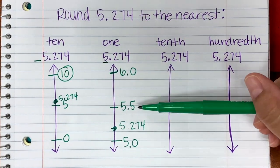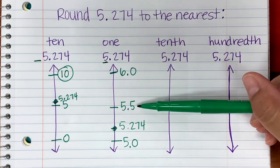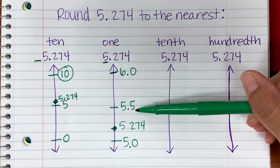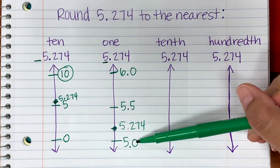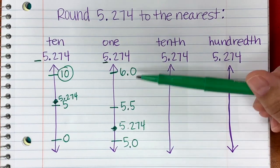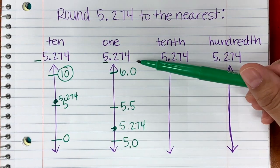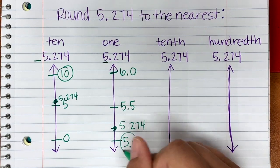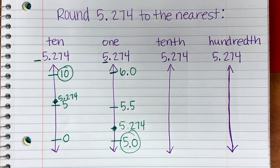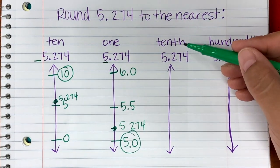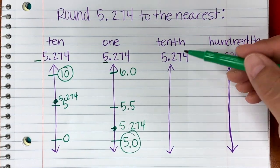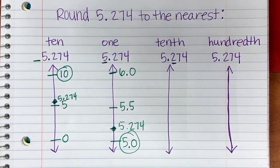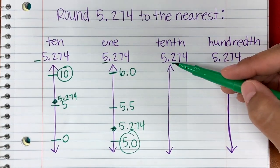If the number is at the midpoint or higher, we round up. If it is below the midpoint, we round down. Since 5.274 falls below the midpoint of 5.5, we round down. So 5.274 rounded to the nearest one is 5. Now, rounding to the nearest tenth — find the tenths place.